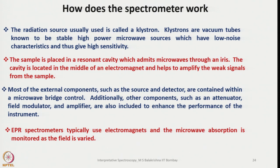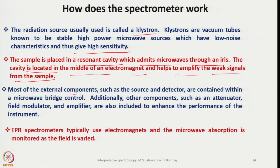The radiation source usually used is called a klystron. Klystrons are vacuum tubes known to be stable, high-power microwave sources with low noise characteristics, giving high intensity. The sample is placed in a resonant cavity between the magnets, which admits microwaves through an iris and helps amplify weak signals from the sample. External components such as the source and detector are contained within the microwave bridge control, and additional components such as attenuator, field modulator, and amplifier are also included to enhance performance.